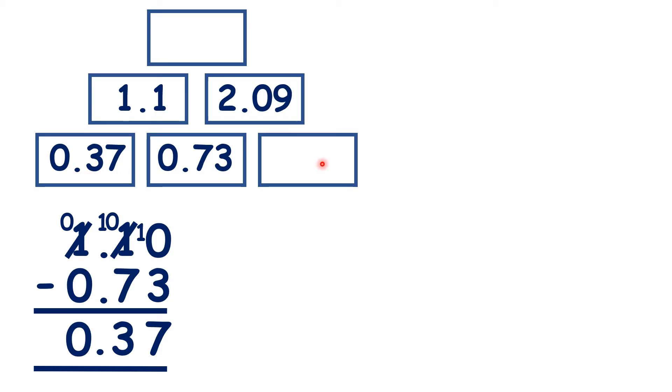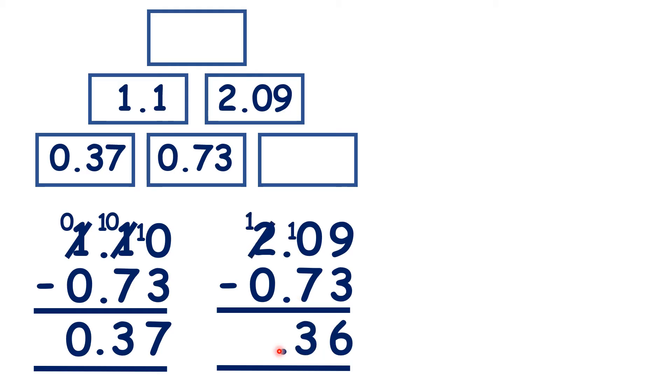Now for this brick here, we need 2.09 minus 0.73. So that's 1.36.